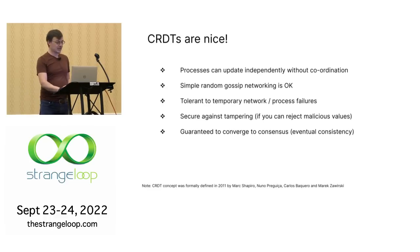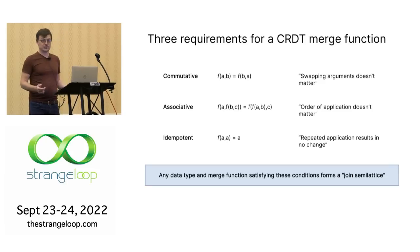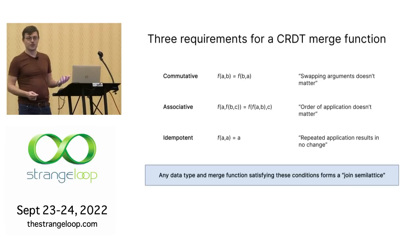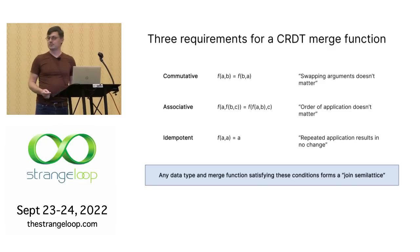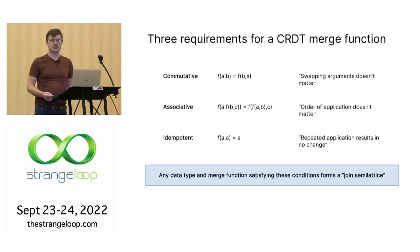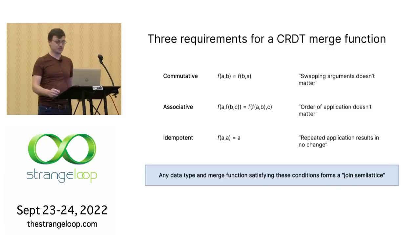What you need to make a CRDT work is a merge function with three properties. It's got to be commutative — you can swap the order of arguments. It's got to be associative — you can put brackets wherever you like in your calculation. And it's got to be idempotent — if you merge the same value, you get the same result. If you have a data type and a merge function satisfying these conditions, you get a mathematical structure called a join semi-lattice, and that's all you need for a CRDT.